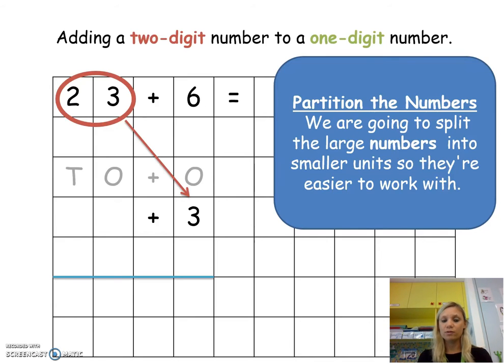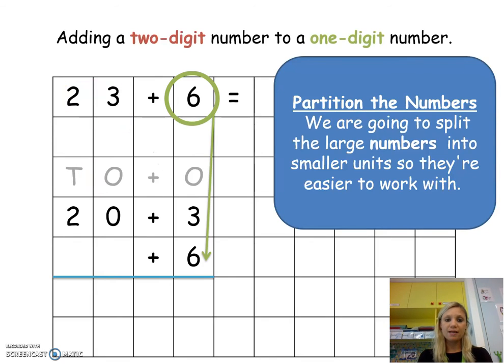We have 23. We're going to split that into tens and ones. We can see that 23 has 3 ones, so I've recorded it under the ones column. It also has 2 tens which represents 20, so I'm going to record that under the tens column. Next we're going to look at the 6. The 6 is only a whole digit number so it has 6 ones and no tens.